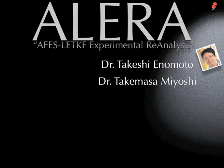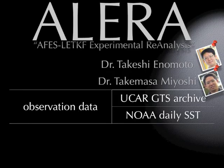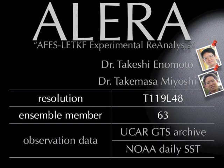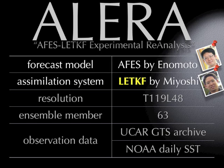This product is mainly developed by the two genius guides here. The assimilated observations are obtained from the JMA GTS archive and NOAA daily SST. These are the same as the re-analysis products. It has a resolution of T119 with 48 levels and 63 ensemble members, calculated by the AGCM on the assimilator — the fastest supercomputer for meteorological calculations. We adopted a local ensemble transform Kalman filter assimilation system. This is the key point of this product.